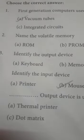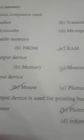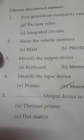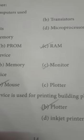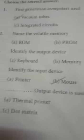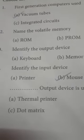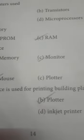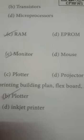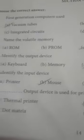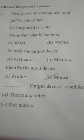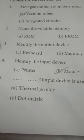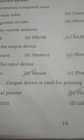Identify the output device. Options: keyboard, memory, monitor, mouse. The output device is the monitor. Now identify the input device. The input device — options include printer, mouse, plotter, projector. Mouse is the input device.